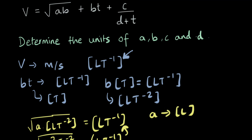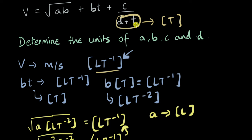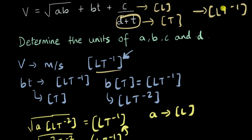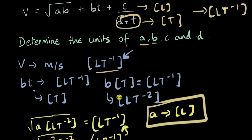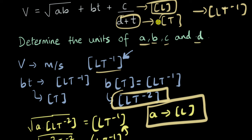Now let's look at c divided by (d plus t). This should also have units of LT⁻¹. In the denominator, we are adding d to time, so d must have the same units as time, which is T. The denominator has dimensions of T, so c must have dimensions of L, giving c/T = LT⁻¹. So to summarize: units of a are L (length), units of b are LT⁻², c is L, and d is T.